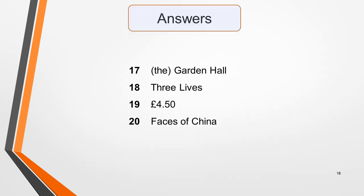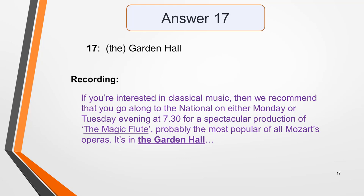Here are the correct answers. Answer 17 is Garden Hall or The Garden Hall. In the recording: 'If you're interested in classical music, then we recommend that you go along to the National on either Monday or Tuesday evening at 7.30 for a spectacular production of the Magic Flute, probably the most popular of all Mozart's operas. It's in the Garden Hall.' As I suggested, answer 17 comes immediately after the mention of The Magic Flute. The Garden Hall is the name of a room or facility, as we predicted. Names of places are proper nouns, so must be written with a capital letter at the start of each word.